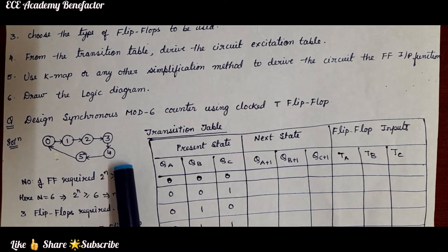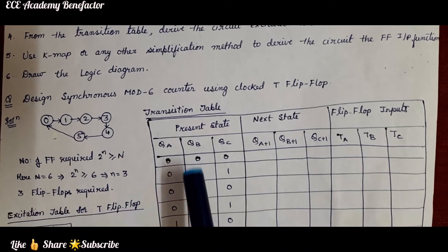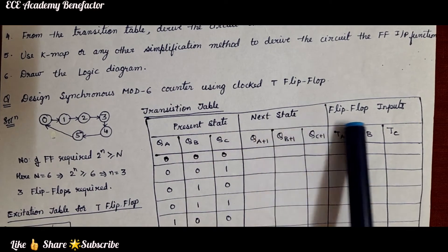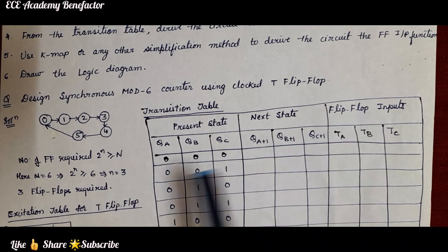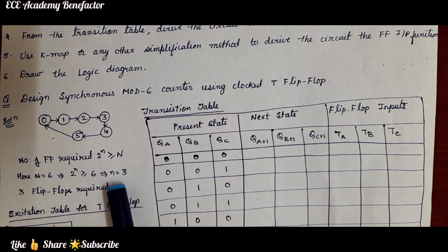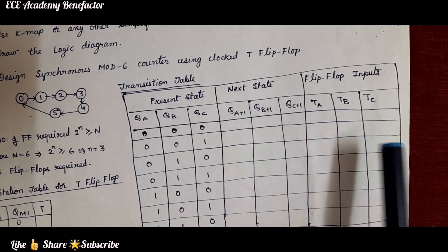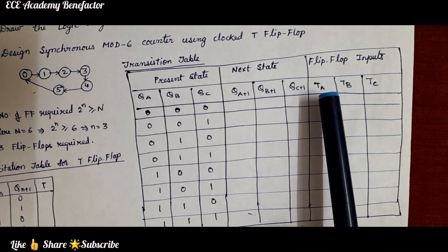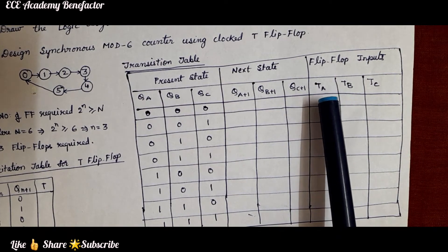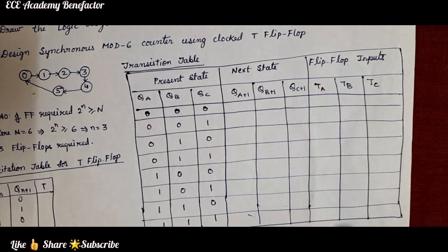The next step is to write the transition table comprising present state, next state, and flip flop inputs. Three flip flops are used and we have selected T flip flops. The flip flop input columns are TA, TB, TC. The present state columns are QA, QB, QC, with next state columns QA+1, QB+1, QC+1.